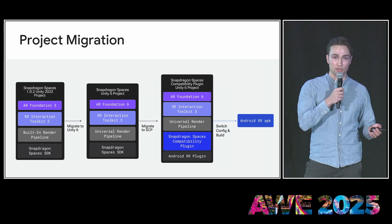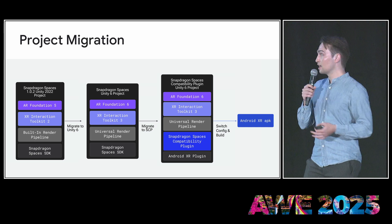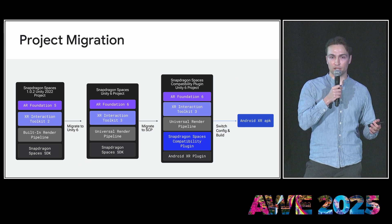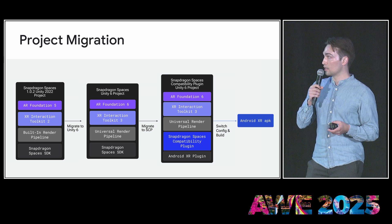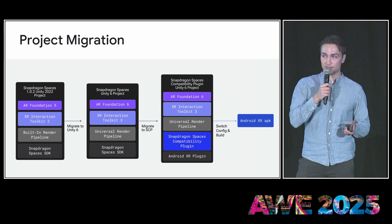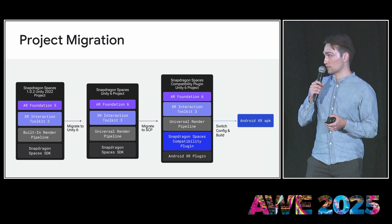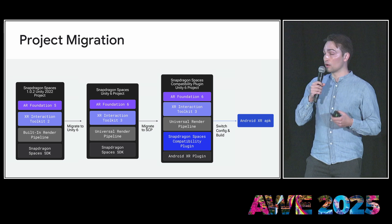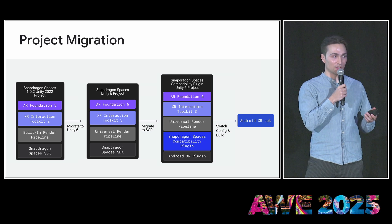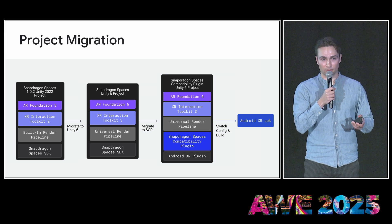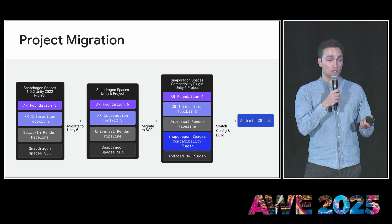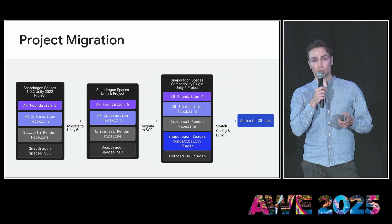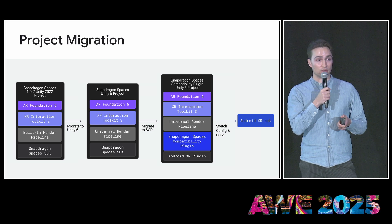This is what the migration path looks like. We're assuming you're starting with a Snapdragon Spaces project at version 1.0.2 and Unity 2022. As a first step, you migrate to Unity 6 — that also includes migrating AR Foundation to AR Foundation 6, then going from XR Interaction Toolkit 2 to XR Interaction Toolkit 3. We also strongly recommend updating your project from the built-in Render Pipeline to Universal Render Pipeline. As a second step, you migrate to the Spaces compatibility plugin — replace the Snapdragon Spaces SDK with the compatibility plugin, and load in the AndroidXR packages provided by Unity and Google. Then open the config tool, select AndroidXR as the target platform, complete setup, validate against our rules, and your project should work on AndroidXR out of the box.